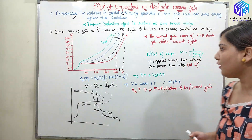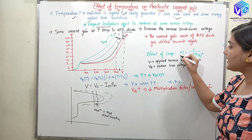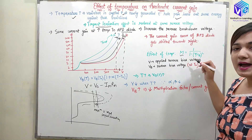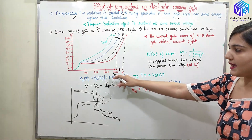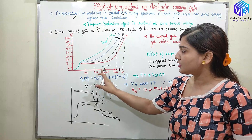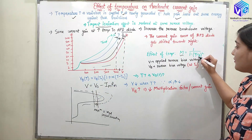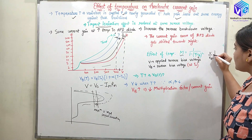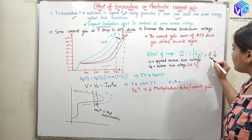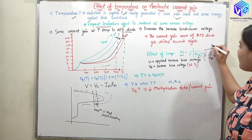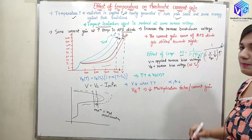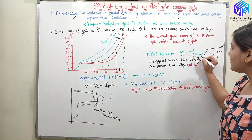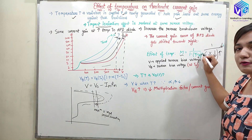The effect of temperature can be represented by this equation. The multiplication M is represented as 1 upon (1 minus V upon VB), where V is the applied reverse bias voltage. When I increase VB, V upon VB is going to decrease. Then 1 minus V upon VB is going to increase, and if I divide 1 by it, the result is going to decrease. So the multiplication factor is going to decrease.